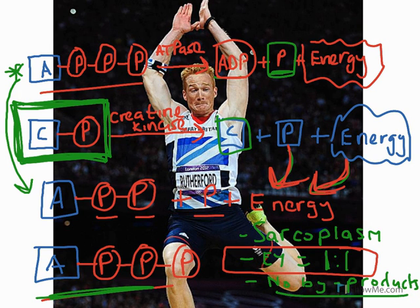So that is our phosphocreatine system, our creatine phosphate system, our ATP-PC system, and our A-lactacid system — all the same concept with slightly different names. Make sure you can spot those in a question. Likely questions ask you to describe the reaction — the breakdown of creatine phosphate recoupling with ADP to form ATP — or to evaluate the strengths and weaknesses of the system. Future exercise physiology videos coming soon. Any feedback is always gratefully received.